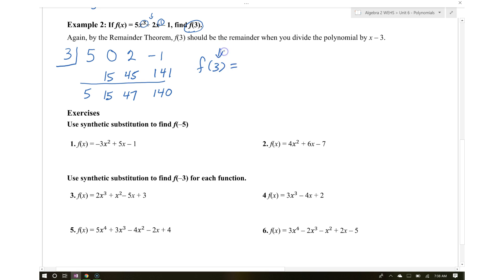You can check using the direct method: f of 3 equals 5 times 3 to the third power plus 2 times 3 minus 1. Hopefully you had a chance to check with a calculator. It does come out to 140.